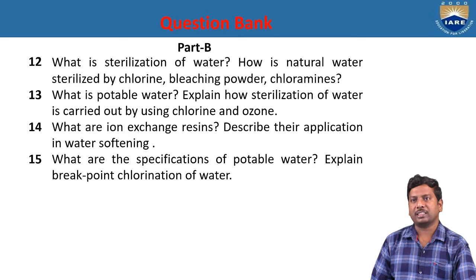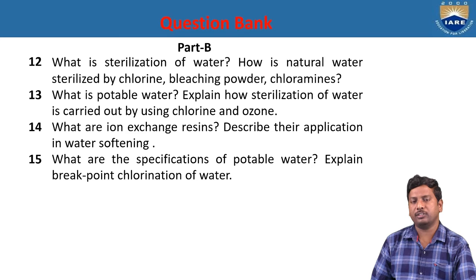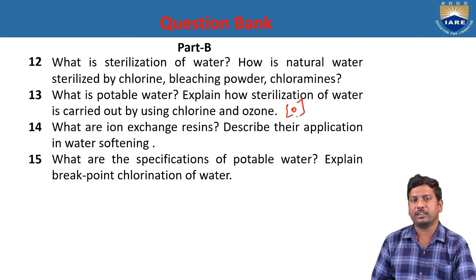What is potable water? Explain sterilization by chlorine and ozone. Potable water is the sample of water useful for domestic purpose or human consumption. In ozone sterilization, ozone (O₃) decomposes to O₂ and nascent oxygen [O], and that nascent oxygen acts as a disinfectant.